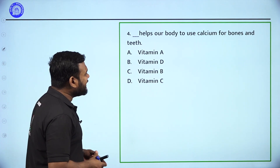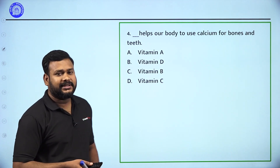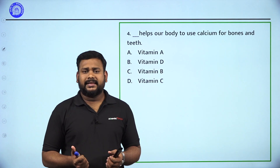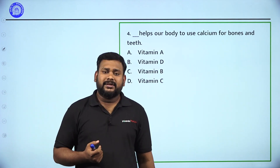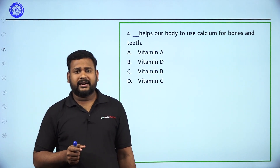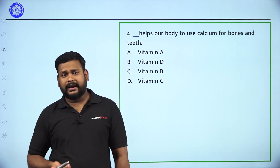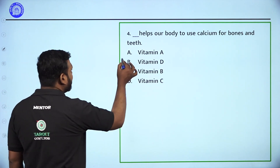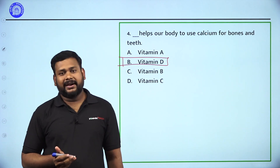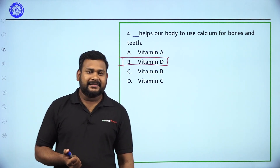Next question: Which vitamin is used to support calcium for bones and teeth? Options: Vitamin A, Vitamin D, Vitamin B. Calcium is very important for bones and teeth. Vitamin D helps the body absorb calcium effectively. When we look at sunlight, the body automatically synthesizes Vitamin D. So the correct answer is Option B, Vitamin D.